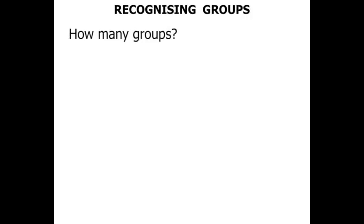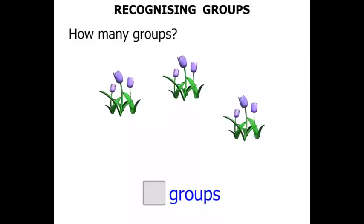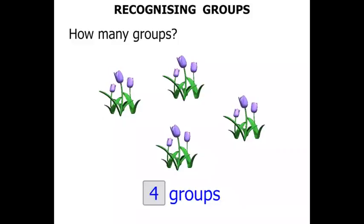Recognising Groups. How many groups? We'll write our answer down here. One group of flowers. Two groups of flowers. Three groups of flowers. Four groups of flowers. We've got four groups.